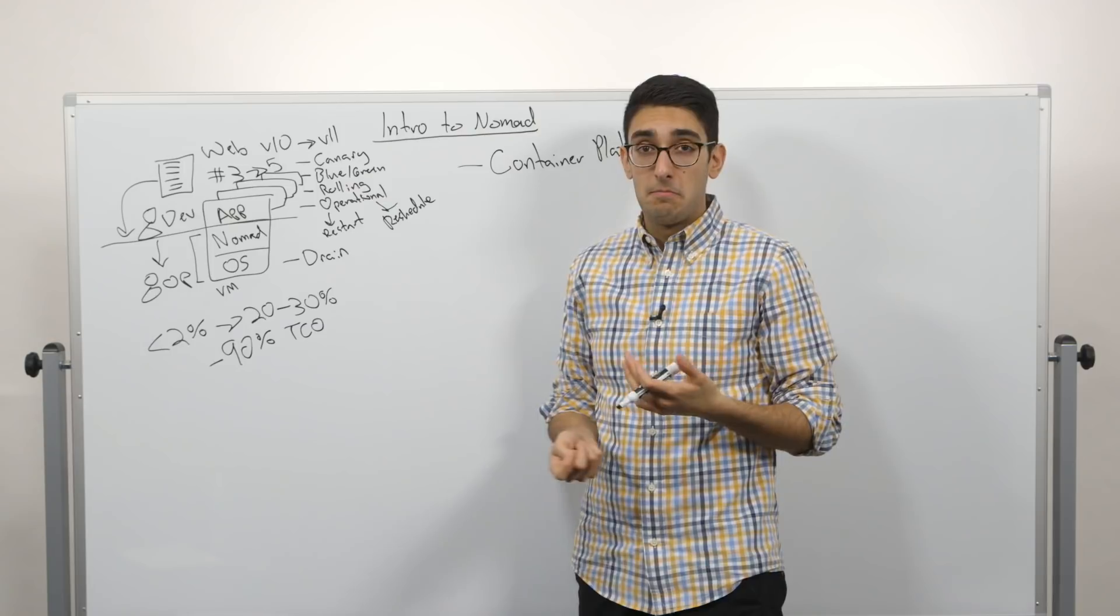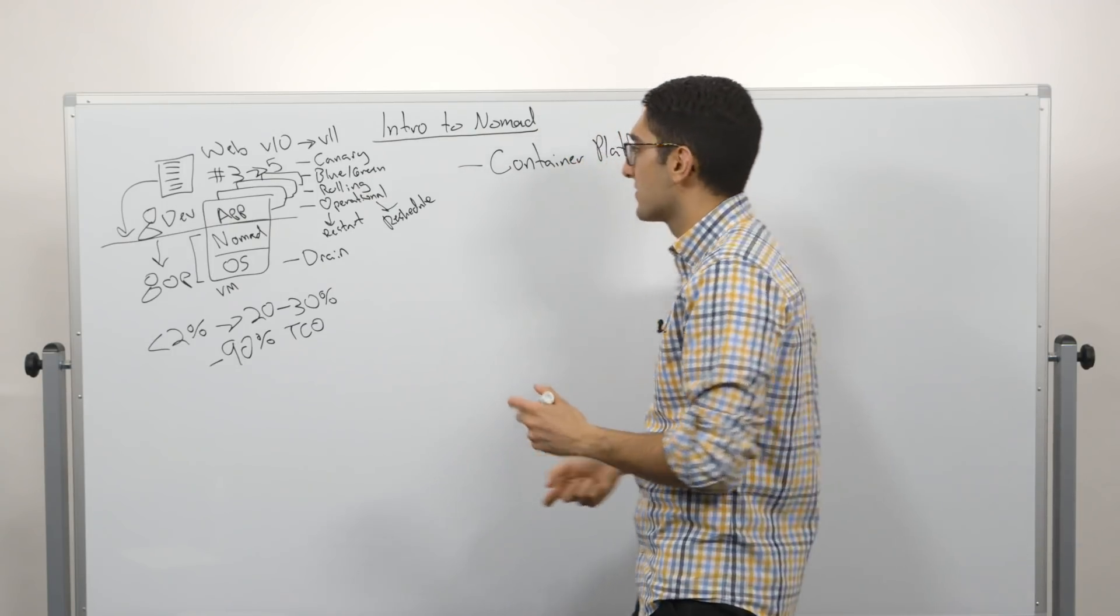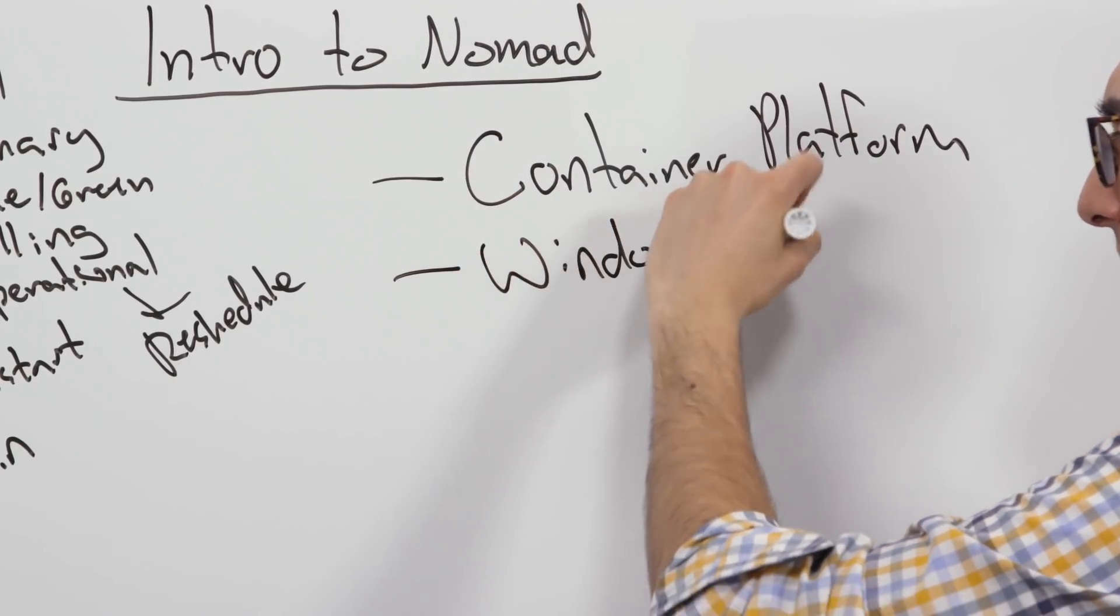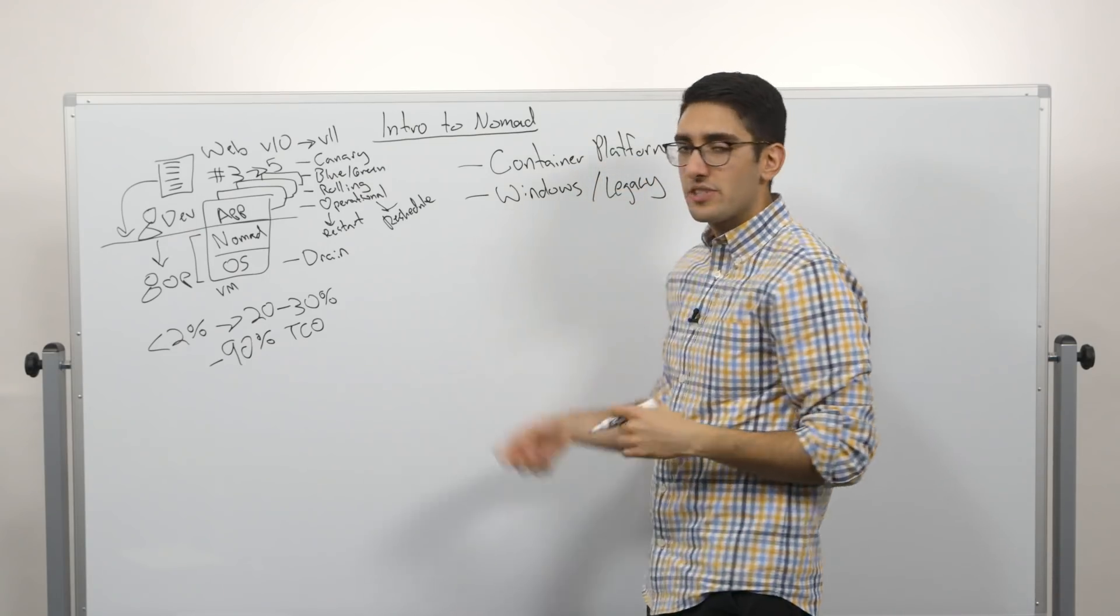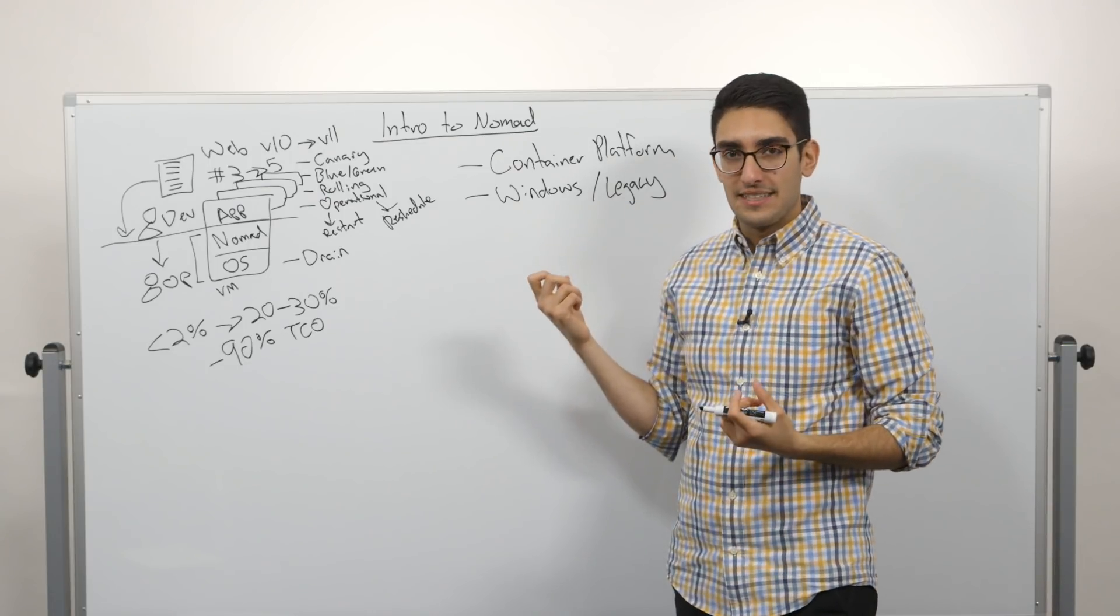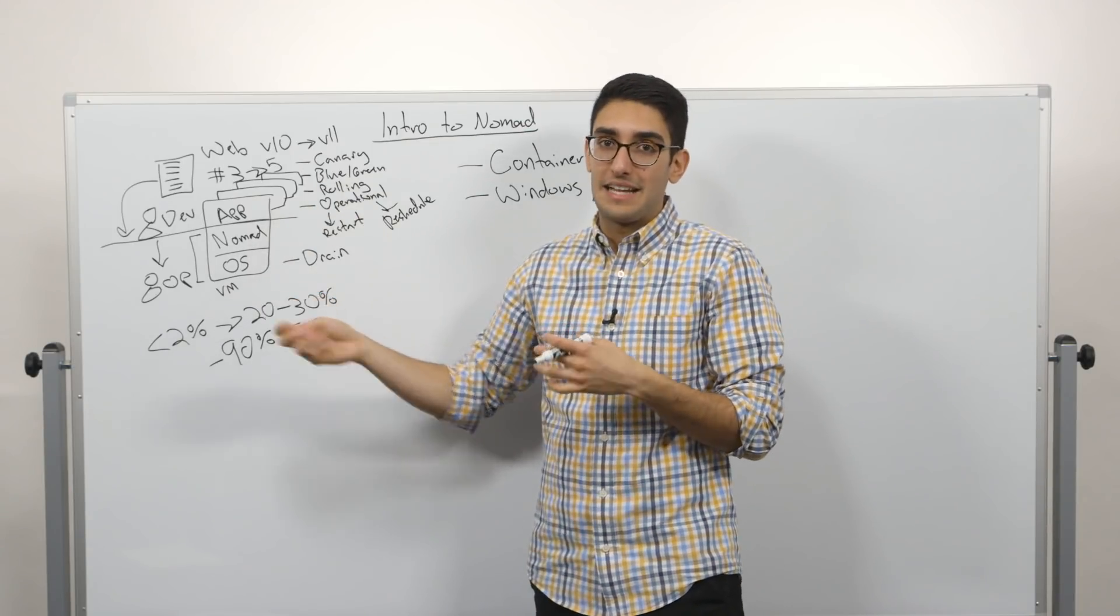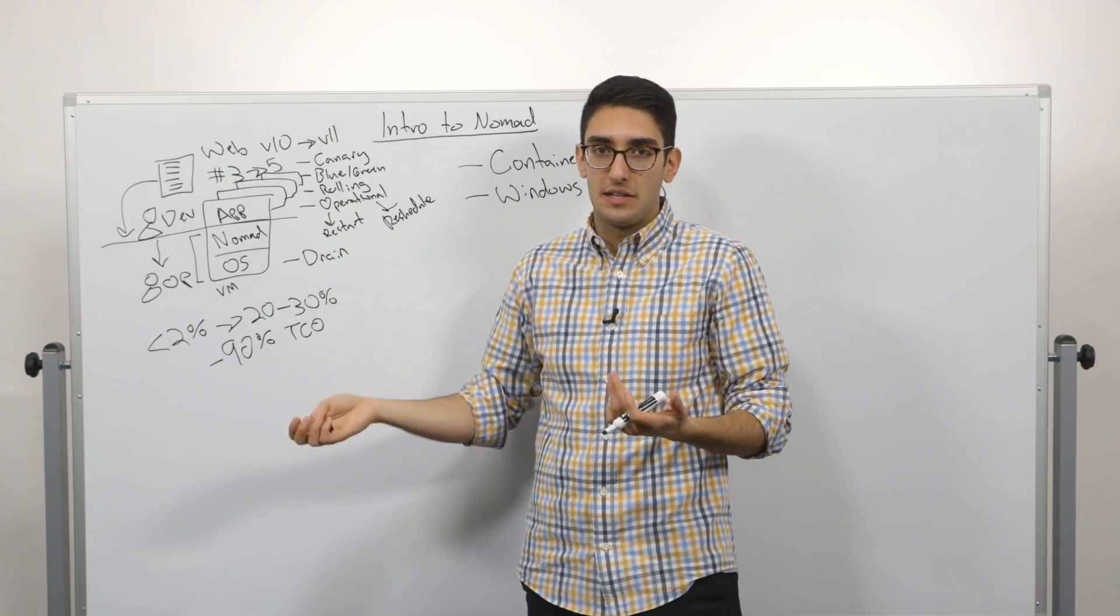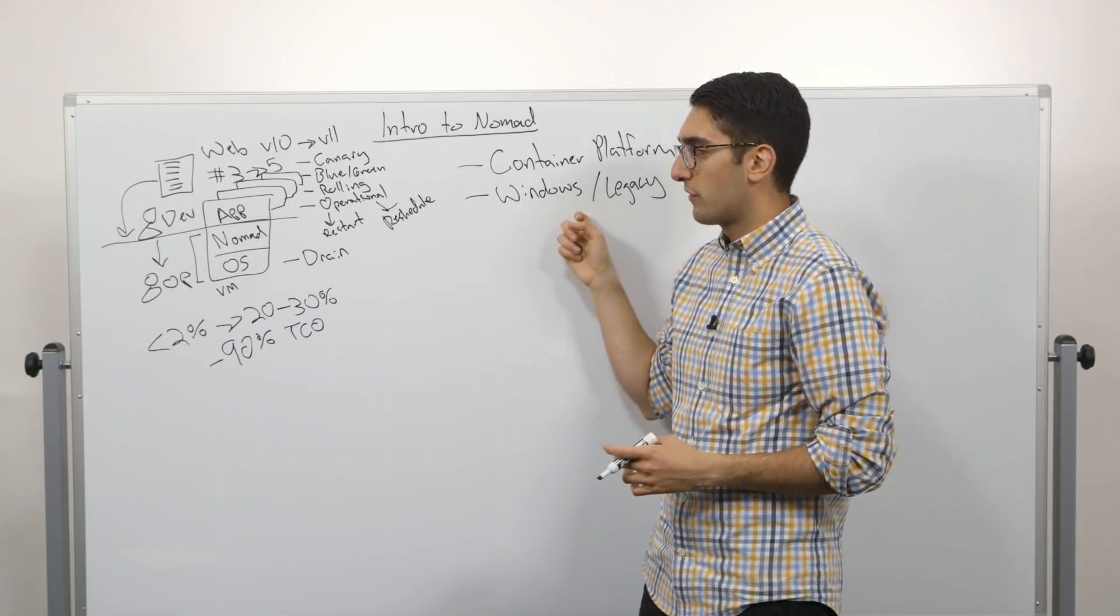But what about applications that aren't containerized or that can't easily be containerized? This is actually a whole second use case for Nomad, which is both Windows as well as legacy applications. So when we talk about some of these applications, maybe it's just a simple C-sharp application that we're deploying on Windows, or it's something more heavyweight that we can't easily containerize. Nomad allows us to run many of these types of workloads without needing to make that sort of transition in packaging format. So a common use case is running C-sharp apps directly on top of Windows without containerizing and reporting them to Linux.